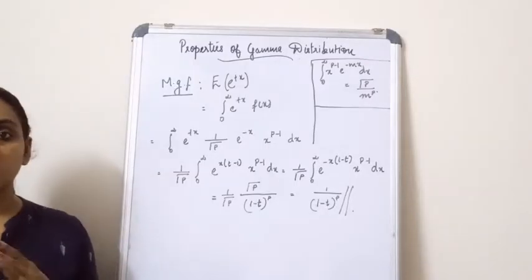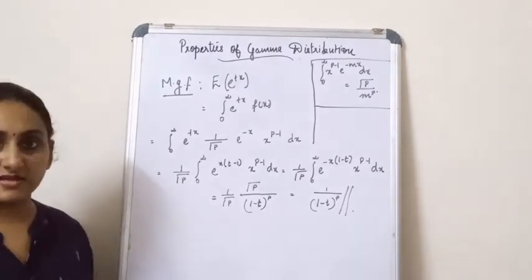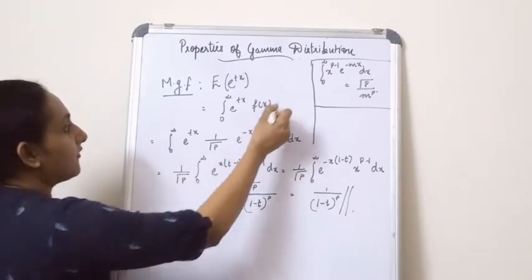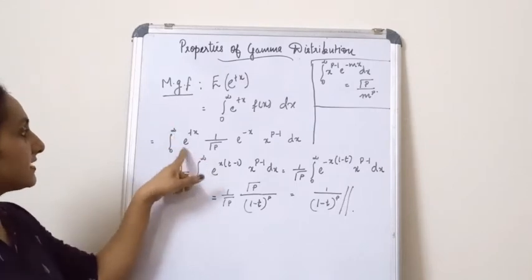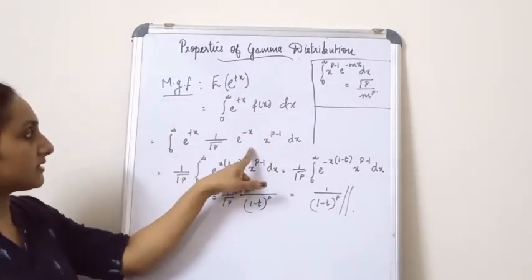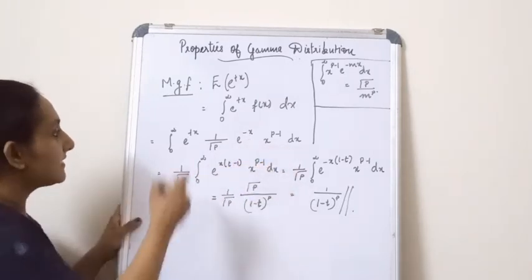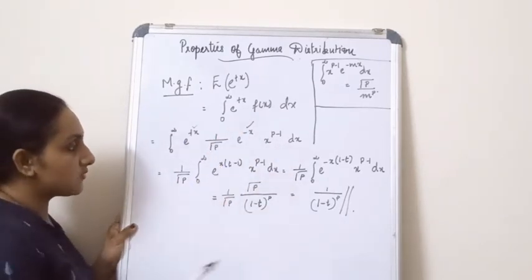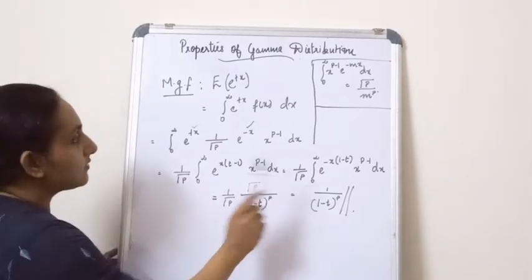Next, we will find the MGF of this distribution. The MGF is equal to E[e^(tx)] = integral from 0 to infinity of e^(tx) f(x) dx. Substituting f(x) = (1/Γ(p)) e^(−x) x^(p−1), I club the exponential terms together to get e^(−x(1−t)) x^(p−1) dx.